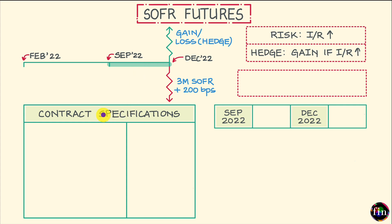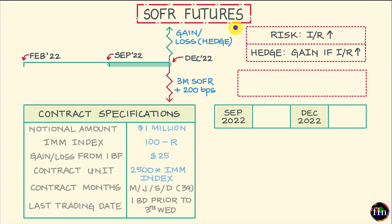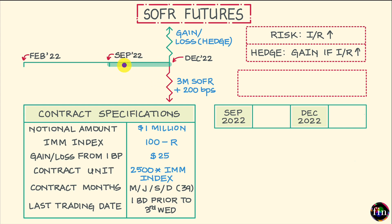Now let's quickly take a look at the contract specifications for three-month SOFR futures. The notional amount is $1 million. On any given day, the price, or level, of three-month SOFR futures is quoted as 100 minus the implied three-month SOFR for the chosen reference quarter — let's denote this rate as capital R. This way of quoting the level is also referred to as the IMM index.